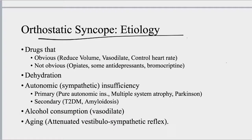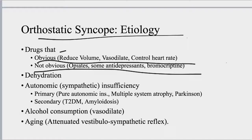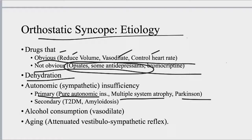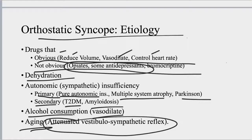In summary, orthostatic syncope is caused by drugs — obvious ones reduce volume, vasodilate, or control heart rate, while the non-obvious ones to remember are opiates and antidepressants. Dehydration is a major factor. Autonomic dysfunction can be primary — such as pure autonomic insufficiency, multiple systems atrophy, or Parkinson's — or secondary, such as diabetes and amyloidosis. Alcohol causes vasodilation and dehydration. Aging is an independent risk factor associated with an attenuated vestibulosympathetic reflex.